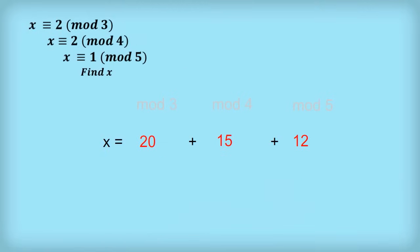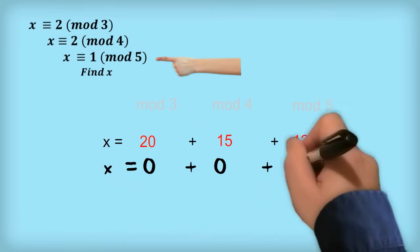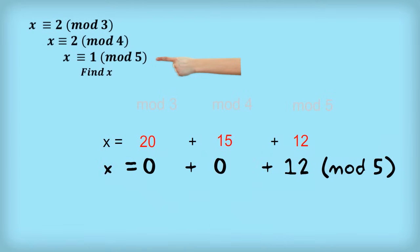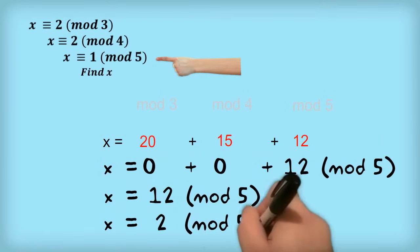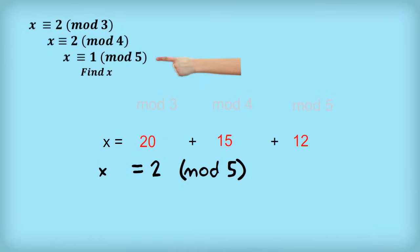Now let's consider mod 5. If we apply mod 5 to x, all we have to worry about is the third section. x mod 5 will equal 2, but we want it to be 1. So we need to find a number to multiply 12 by so that 12 times that number, mod 5, equals 1.